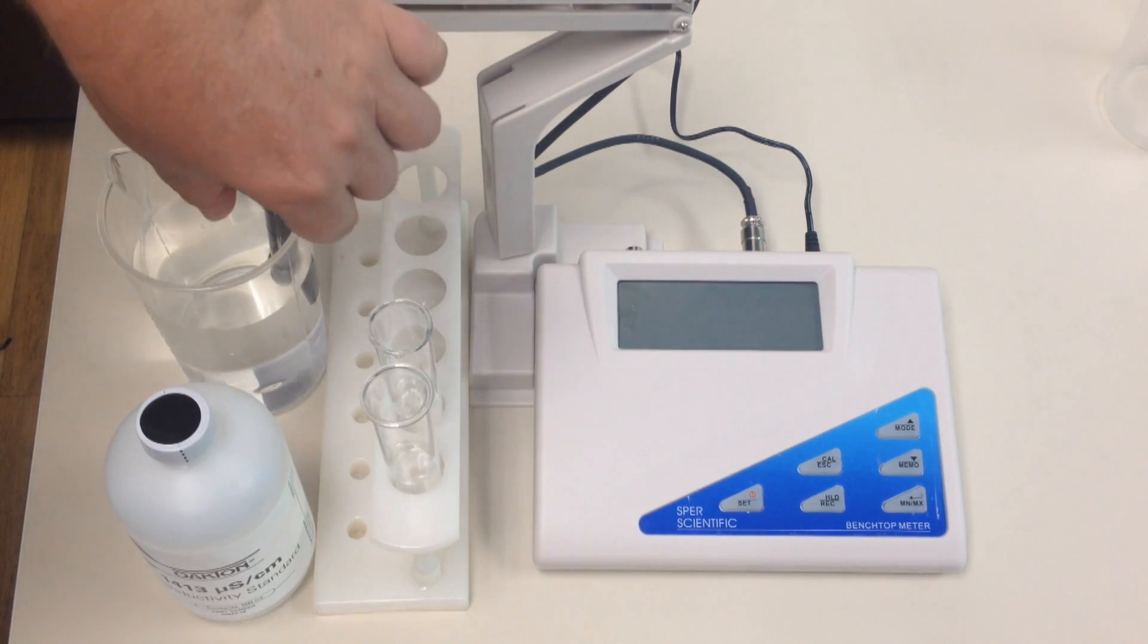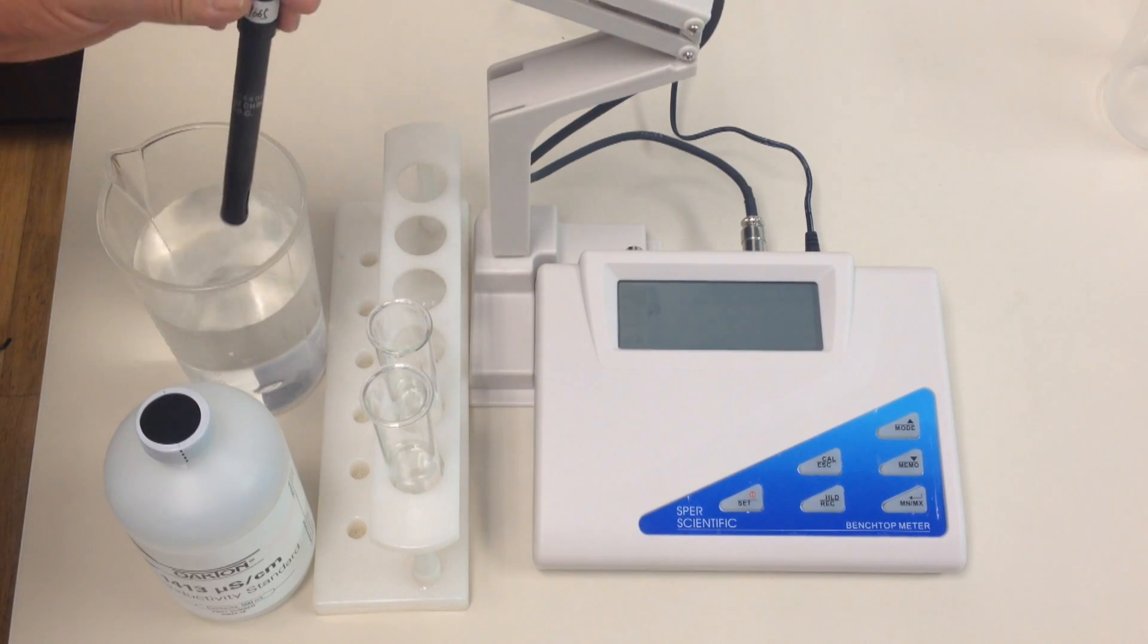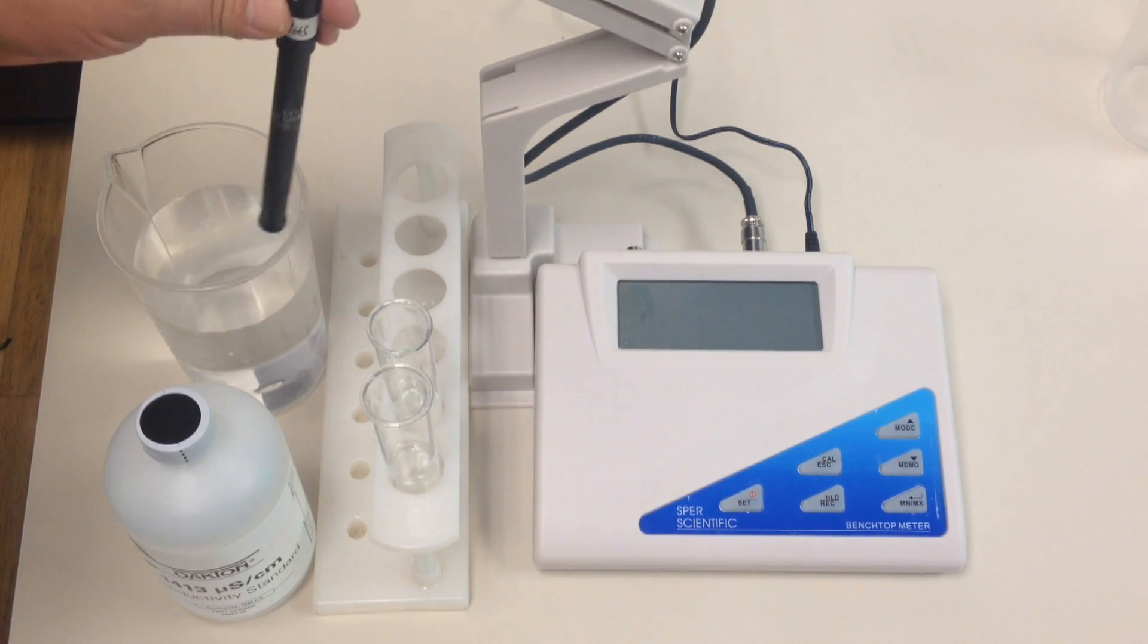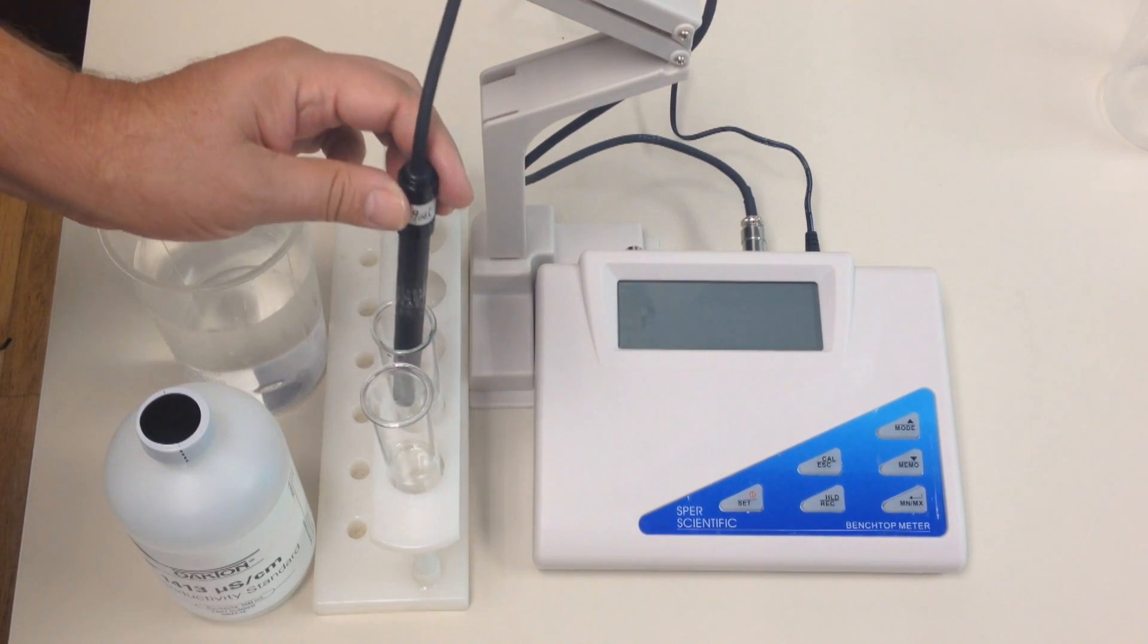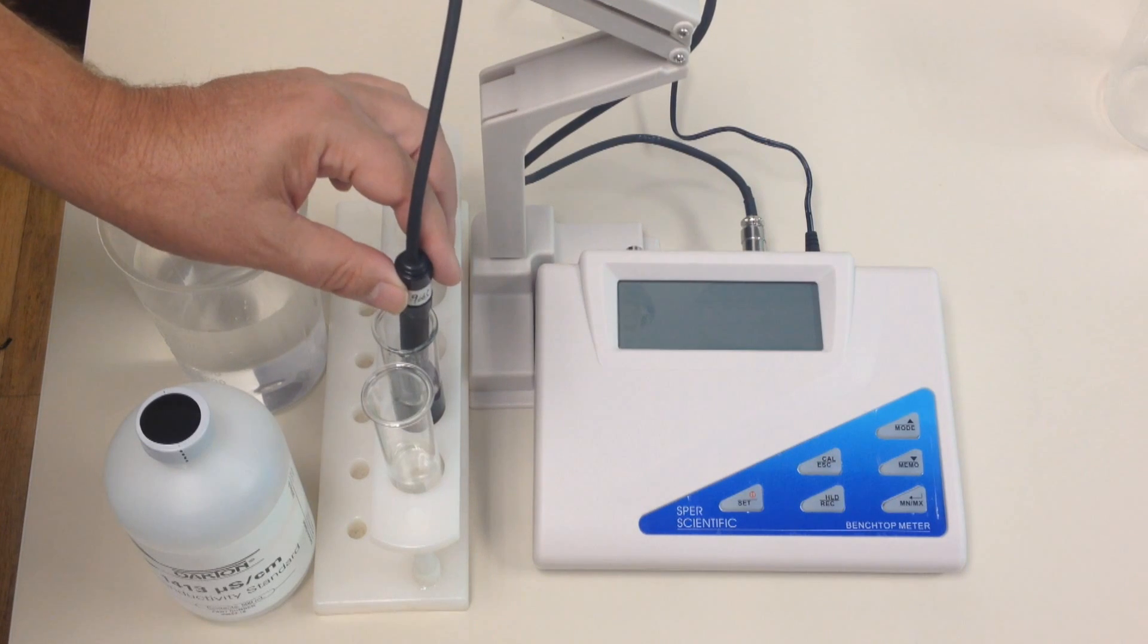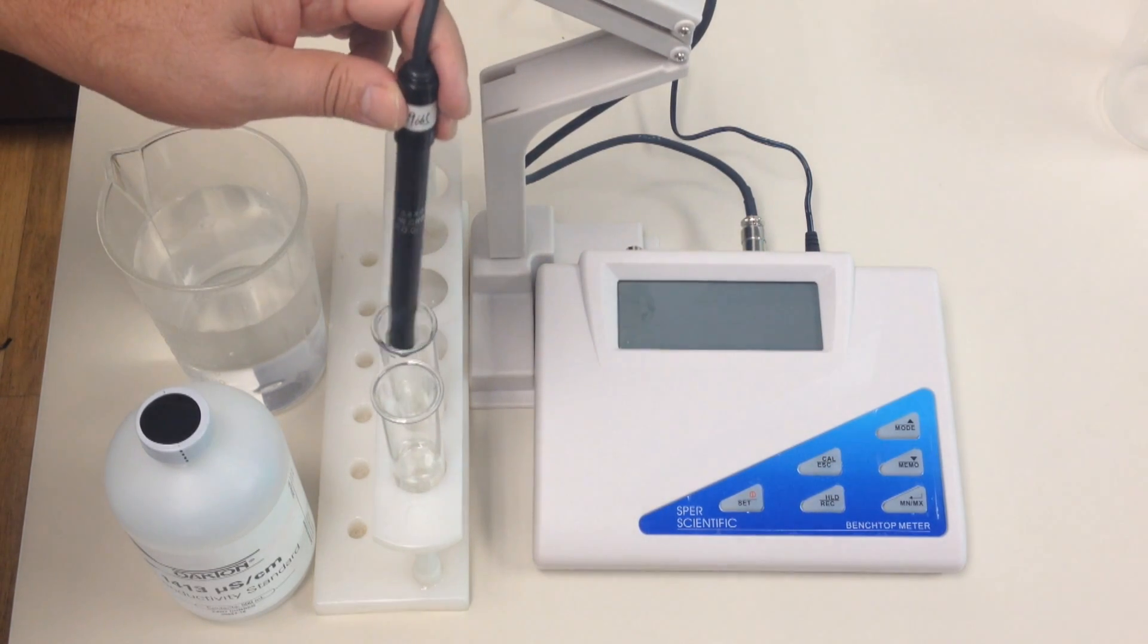So the first thing you do after it's been sitting in for 30 minutes is you take your probe, tap out the distilled water to eliminate as much contaminants as you can, put it into your first beaker, swish it around a little bit, tap it out.